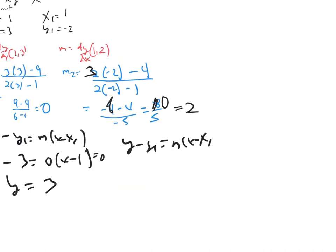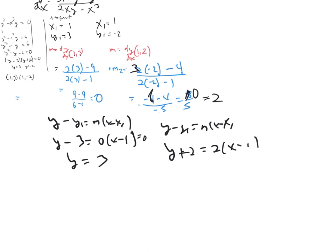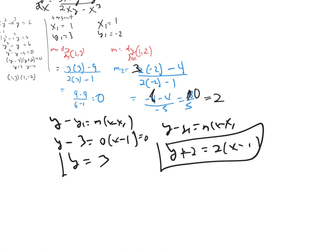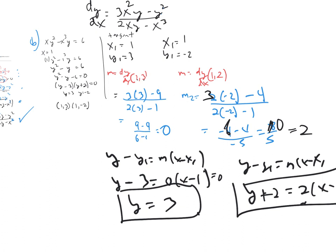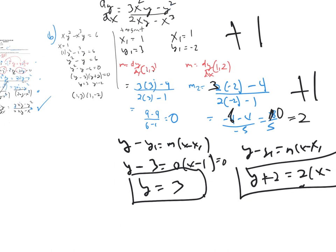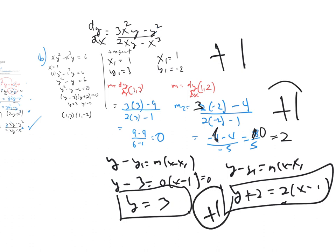For the second tangent line: Y minus negative 2 — so Y plus 2 — equals slope 2 times X minus 1. You probably got one point for finding the ordered pairs, one point for finding the slopes, and one point for making the equations. That's how you got your points on this problem.